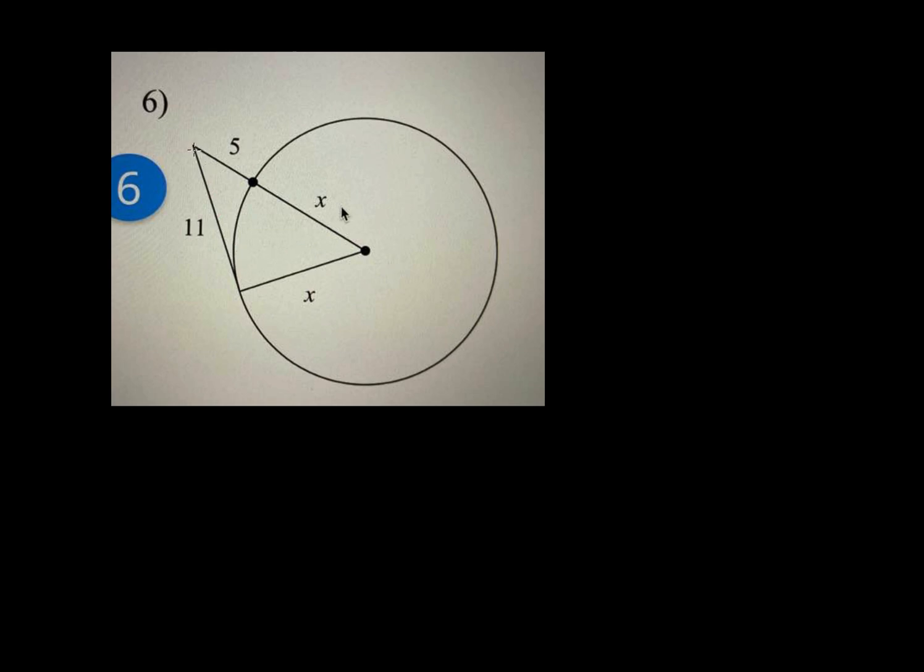So this line right there, it's tangent to the circle. Any tangent line with the radius forms 90 degrees. So we have a right triangle here. That means we could use Pythagorean theorem to find what X is.